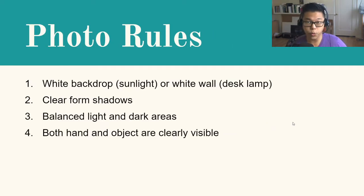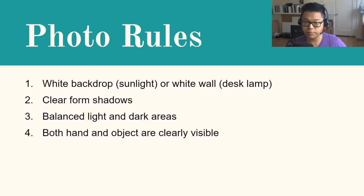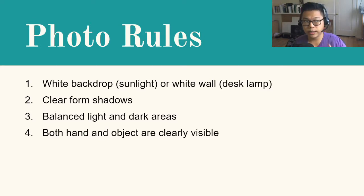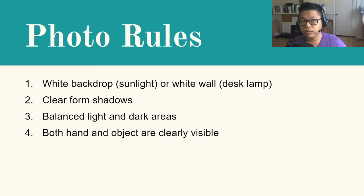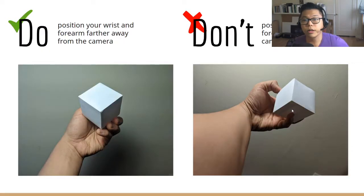In terms of the photo, we do want to use a white backdrop. Since it's been overcast, we're going to use a white wall or a solid colored wall as a background. The second rule: you want clear form shadows. A lot of students have been making the mistake of trying to create shadows with their object onto the wall to create a cast shadow — that's not what we're looking for. We're looking for form shadows, which are the shadows on your hand and on the object itself, not the shadow being cast onto any other surface. It's the dark areas on your hand and on your object. Third, you want a balance between dark and light areas. Fourth, both your hand and your object need to be clearly visible, and it's got to be your whole hand, not just a few fingers.